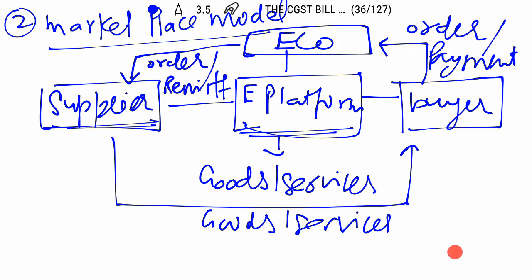So basically, in this model, the supplier uses the electronic platform of another person — the electronic commerce operator. The buyer makes payment to the electronic commerce operator, who forwards the order to the supplier, receives a subscription fee or commission, and remits the remaining amount to the supplier. After that, the supplier delivers goods and services.